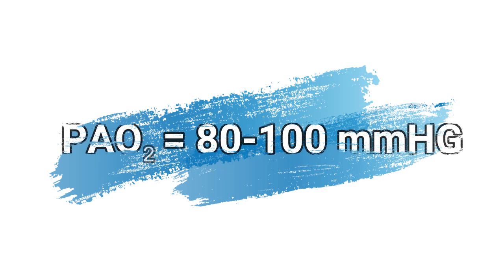Per PaO2 si intende la pressione parziale di ossigeno. Le arterie portano sangue ossigenato ai tessuti, pertanto in esse il valore medio di PaO2 è tra gli 80 e 100 mmHg. Valori di PaO2 inferiori ai range di riferimento indicano un quadro di ipossiemia, mentre valori superiori delineano una condizione di iperossiemia. Valori di PaO2 tra i 30 e i 40 mmHg possono far pensare a un prelievo di sangue venoso invece che arterioso.